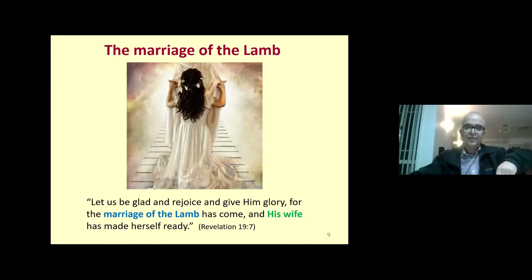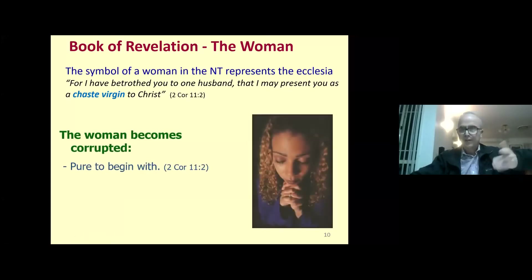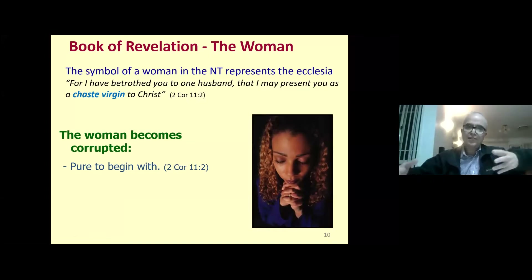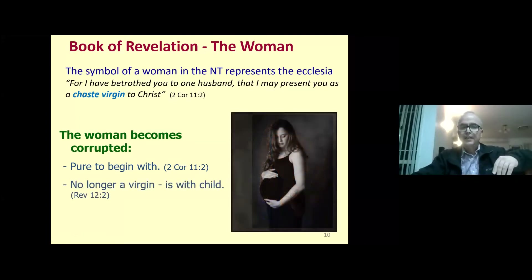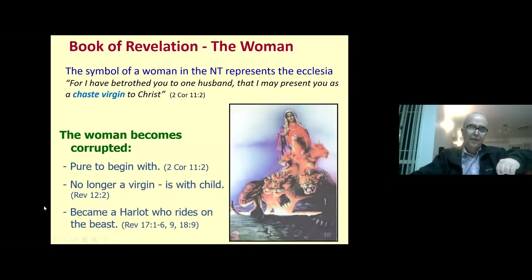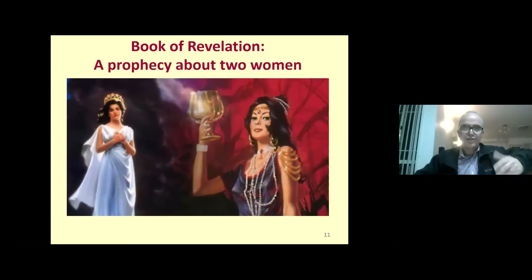In contrast, the book of Revelation also describes a woman who becomes corrupt. The book traces the transition of a woman who begins pure — described in 2 Corinthians 11:2 as a chaste virgin — but by Revelation 12 she's no longer a virgin; she's with child. By Revelation 17, she has become a harlot who rides on the Roman beast.